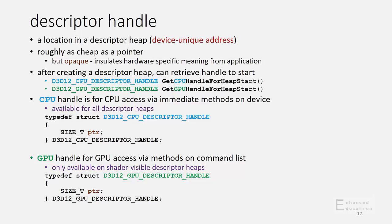A descriptor handle at the API identifies a location in the descriptor heap. It's a device-unique address in the sense that the descriptor handle doesn't distinguish which descriptor heap the descriptor happens to live in. What this allows for, for example, is a descriptor copy method could take in an array of descriptor handles and perform a gather operation on a set of descriptors that happen to come from any number of source descriptor heaps, or potentially all from the same source descriptor heap, and copy to some destination. So the API doesn't have to take in a collection of heap location and offsets. Instead it can just take an array of handles.